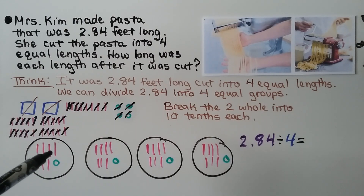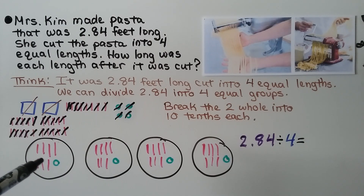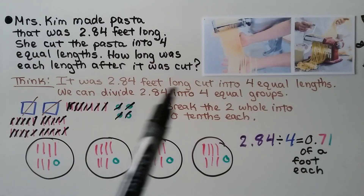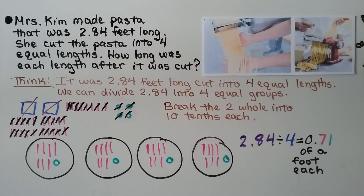We count and see there are seven tenths and one hundredth — that's seventy-one hundredths. Two and eighty-four hundredths divided by four is equal to seventy-one hundredths of a foot each. That's how long each strand of pasta was when she cut them.